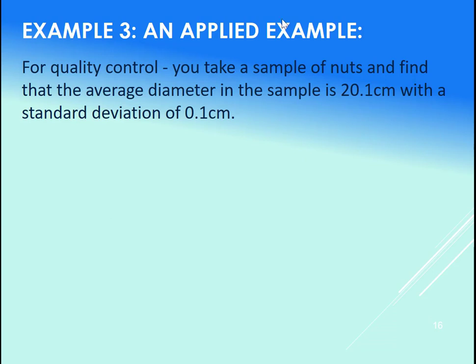To perform quality control, you take a sample. So in this case, we're going to sample the nuts and find an average diameter and a standard deviation. In our case, the average diameter is 20.1 centimeters with a standard deviation of 0.1.